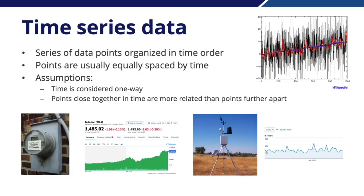Another type commonly used in machine learning is time series data, which is organized in order of time. Typically, points are equally spaced — representing measurements from a sensor every second, minute, hour, or day. We may work with stock prices with ticker data every 15 minutes or daily opening and closing prices, or data from a smart meter with continuous readings and daily, monthly, and annual aggregate numbers representing usage over time.